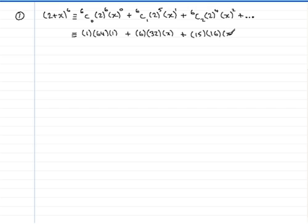So x to the power 2, plus and so on. Just tidying that up now gives us 1 times 64 is 64, and 6 times 32 is 192, so 192x, and then 15 times 16 is 240, so that's 240x squared plus and so on.